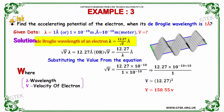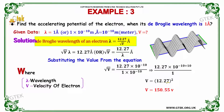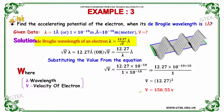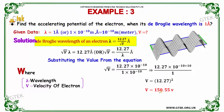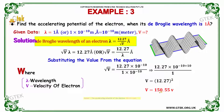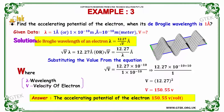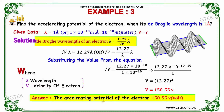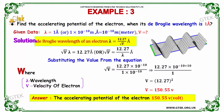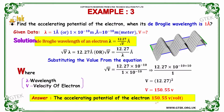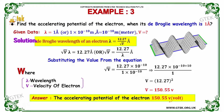So V = (12.27)² = 150.55 volts. The accelerating potential of the electron is 150.55 volts.